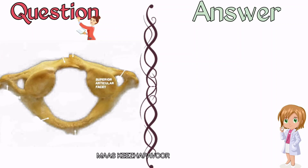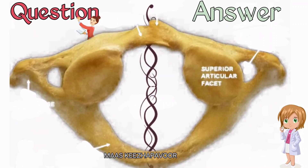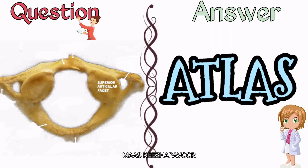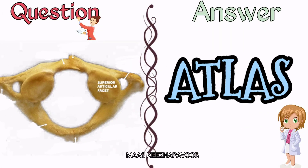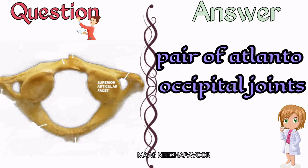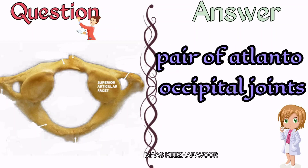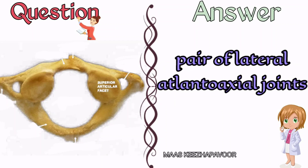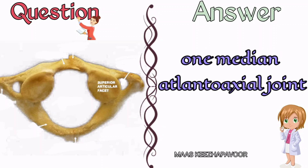Identify the bone and name the joints formed by this bone. The given bone is atlas. The joints formed by atlas are a pair of atlanto-occipital joints, a pair of lateral atlanto-axial joints, and one median atlanto-axial joint.